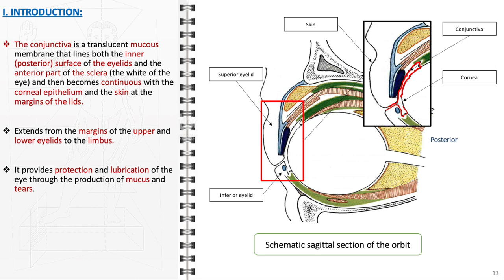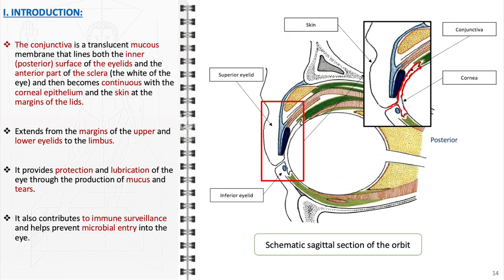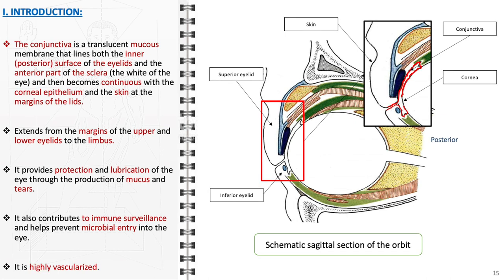This lubrication is essential for maintaining a smooth and clear optical surface, ensuring comfort and optimal visual clarity. Additionally, the conjunctiva contributes to immune surveillance and helps prevent microbial entry into the eye. It is also highly vascularized, supporting its protective and nourishing functions.